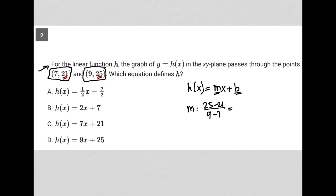So 25 minus 21 is 4. 9 minus 7 is 2. We get 2 here. So we know that 2 is our slope.